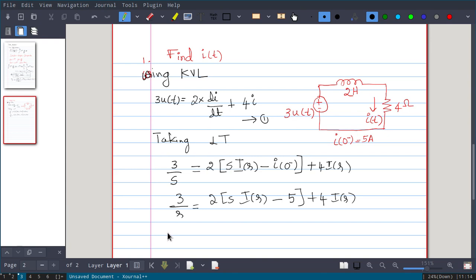Now you solve for this one. So this becomes 3/s. 5 times 2 is 10, so I will take this side 10 and i(s) you keep one side, so i(s) into 2s plus 4 you will get.